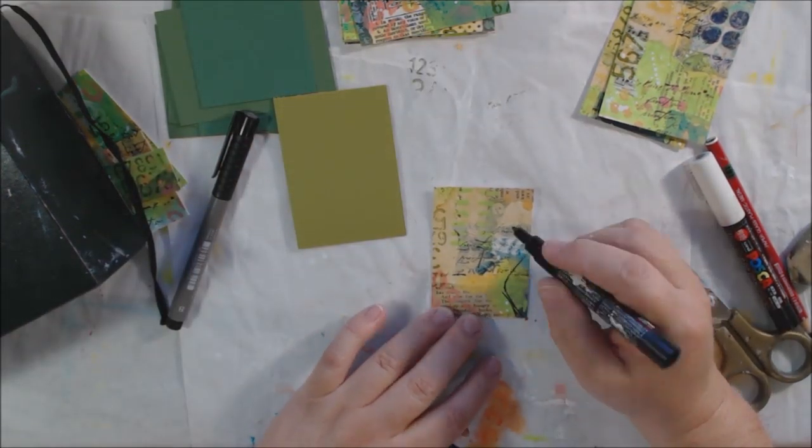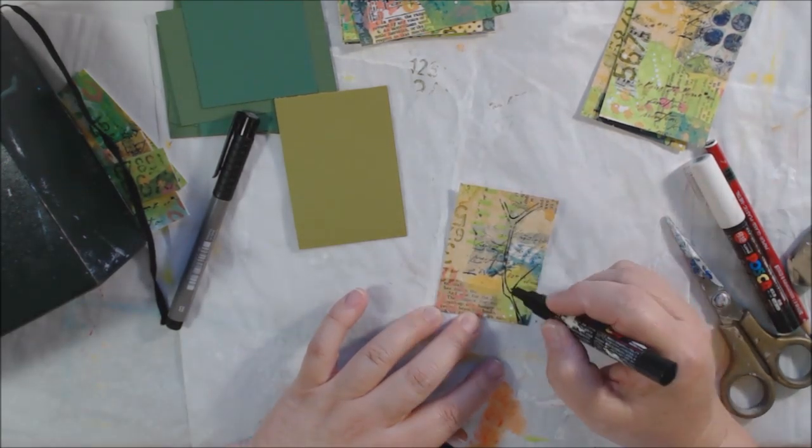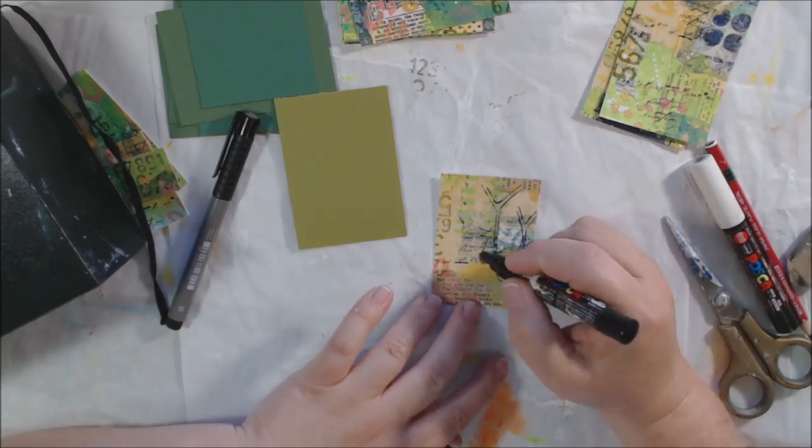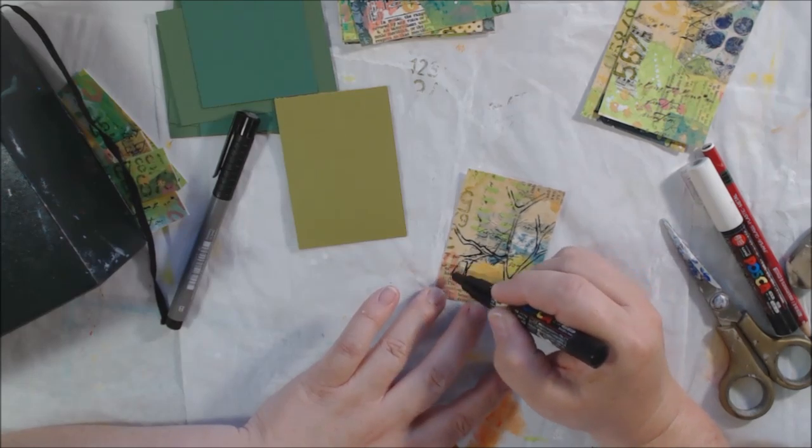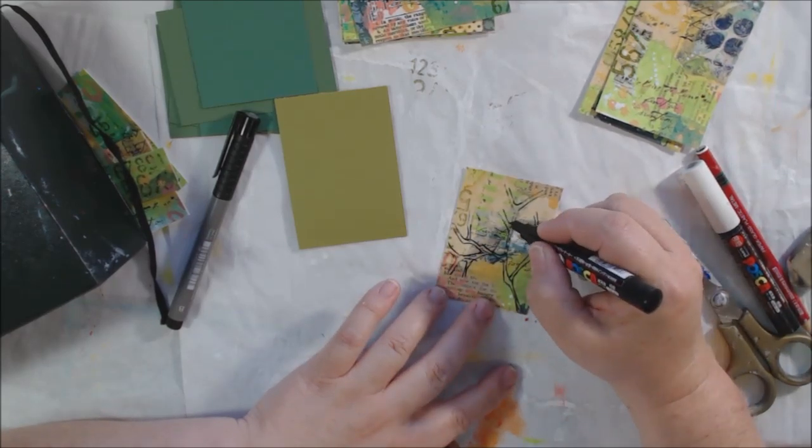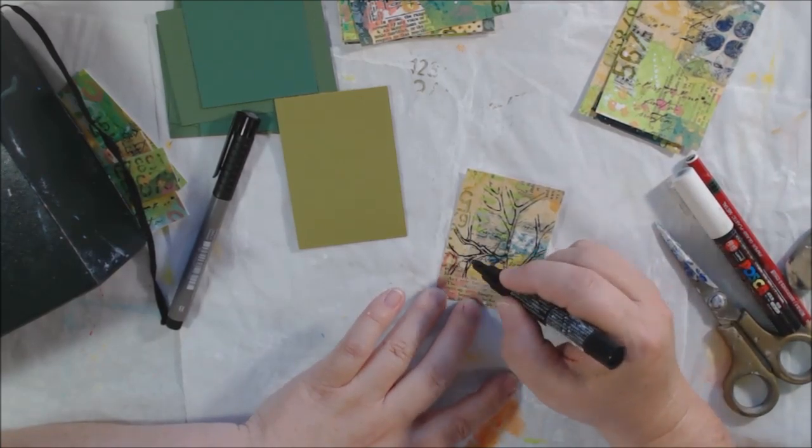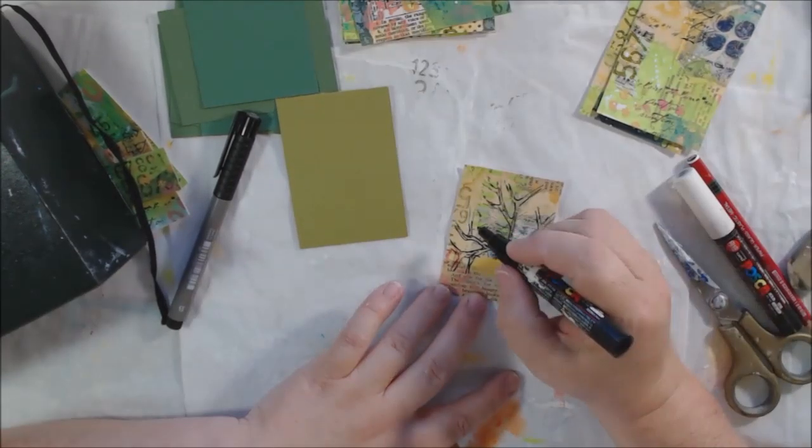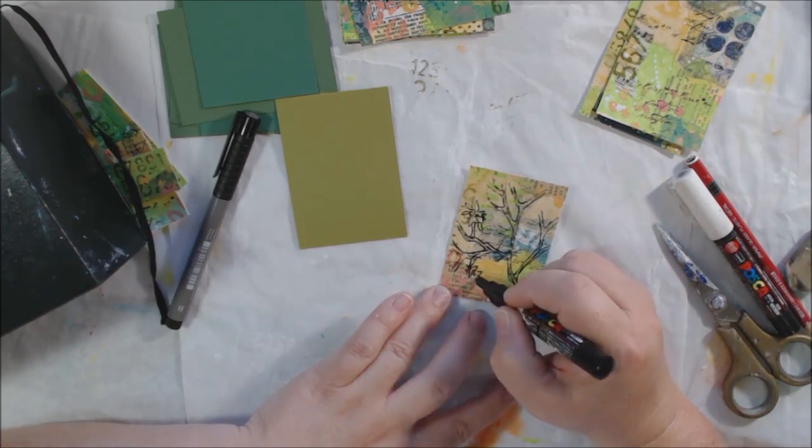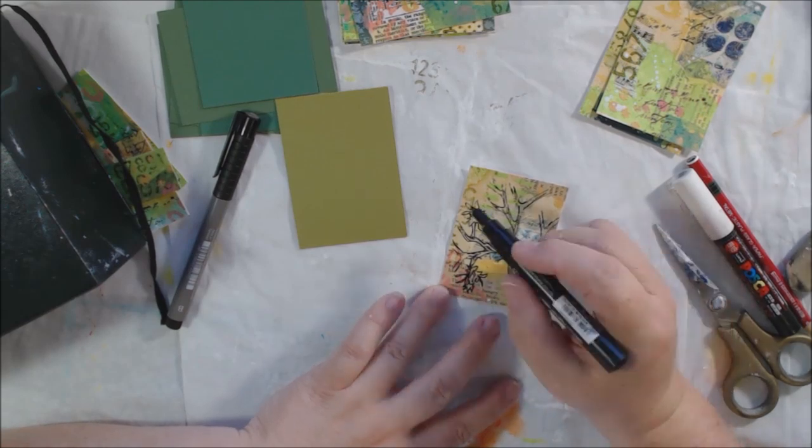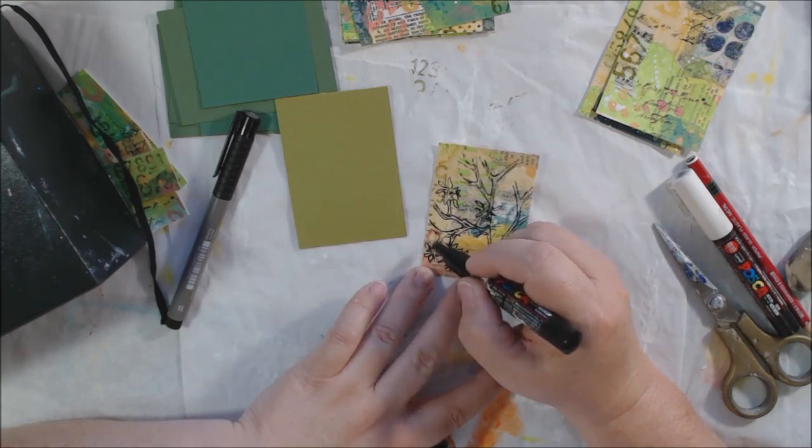For the first ATC, also on the mood board there is a picture of what I assume is probably cherry blossoms on a tree. I'm not sure, but I think it's probably some type of blossoms on a tree. So I decided to just draw something like that onto my ATC. I'm drawing it directly with a fine tip Posca pen, making some flowers, making some leaves, making some branches.